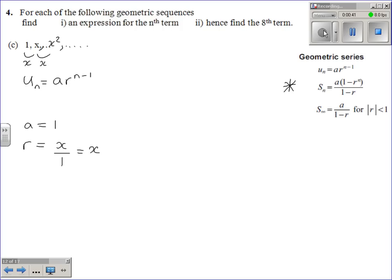So you can see what's happening there: x cubed, x to the power of 4 and so on. So to get our nth term, un is a, the first term, times r, which is x, to the power of n minus 1. So un just equals x to the power of n minus 1, and you're done.